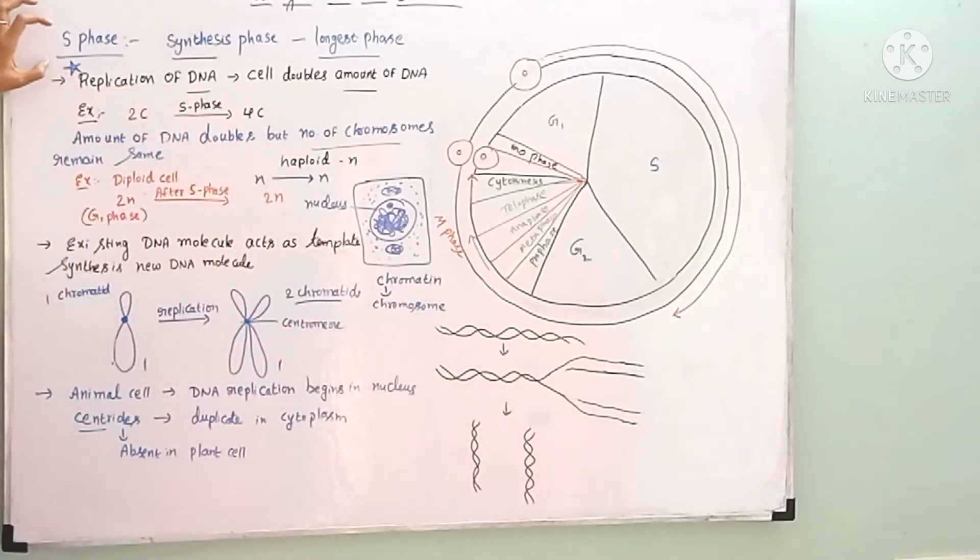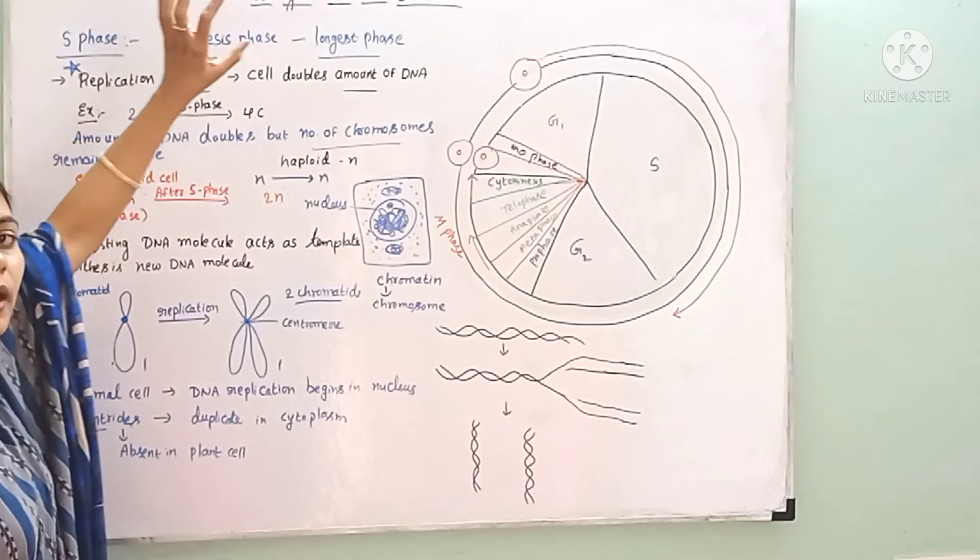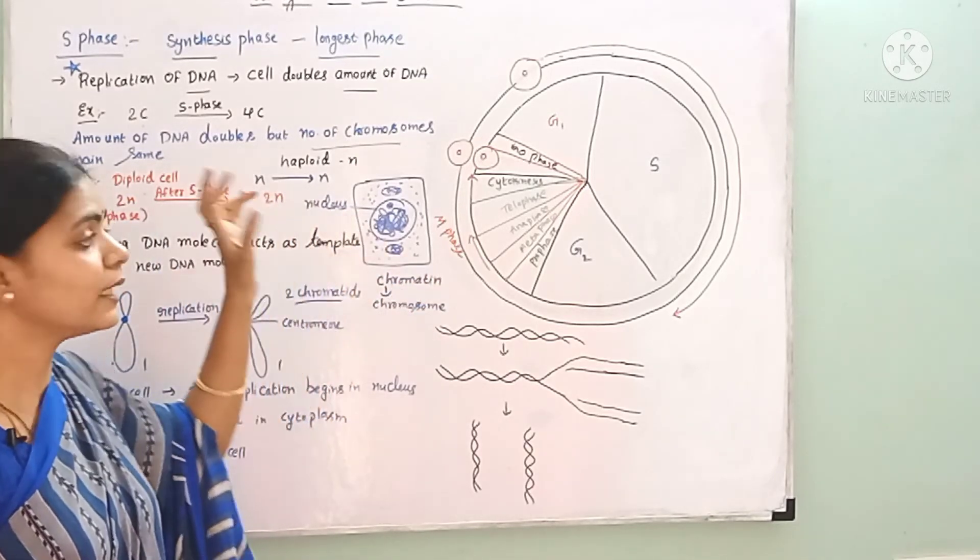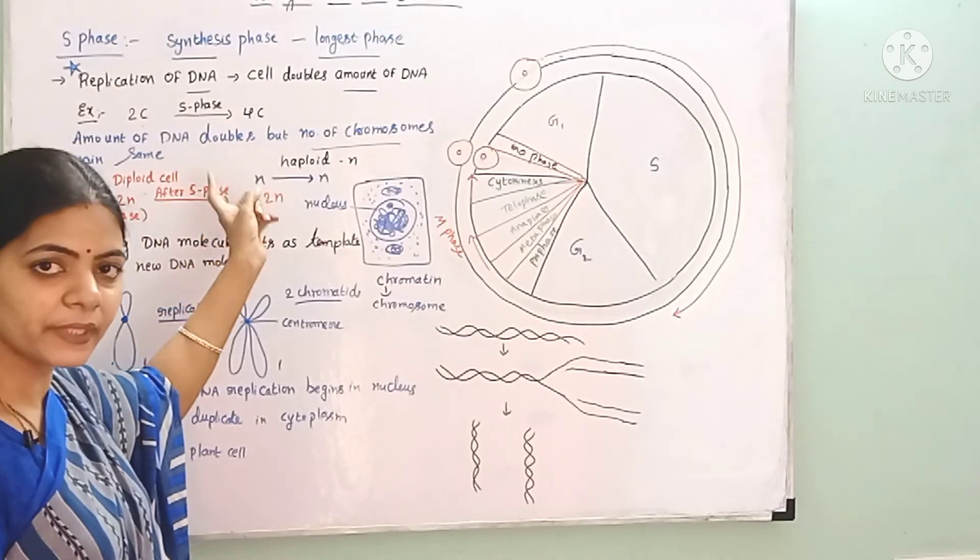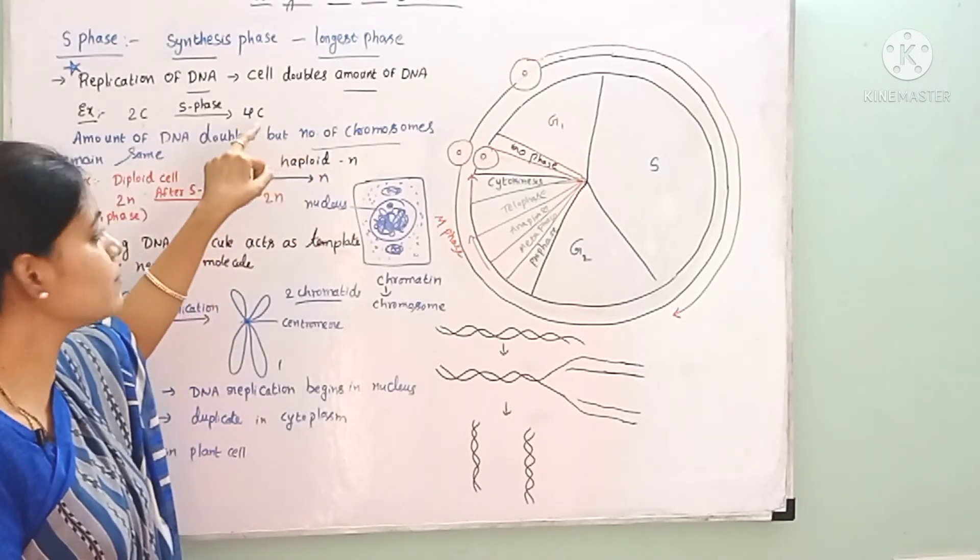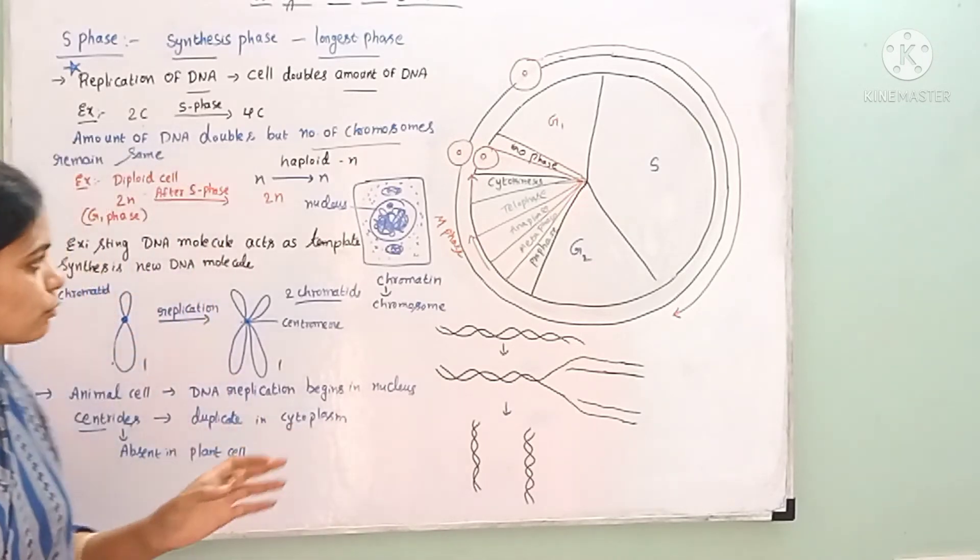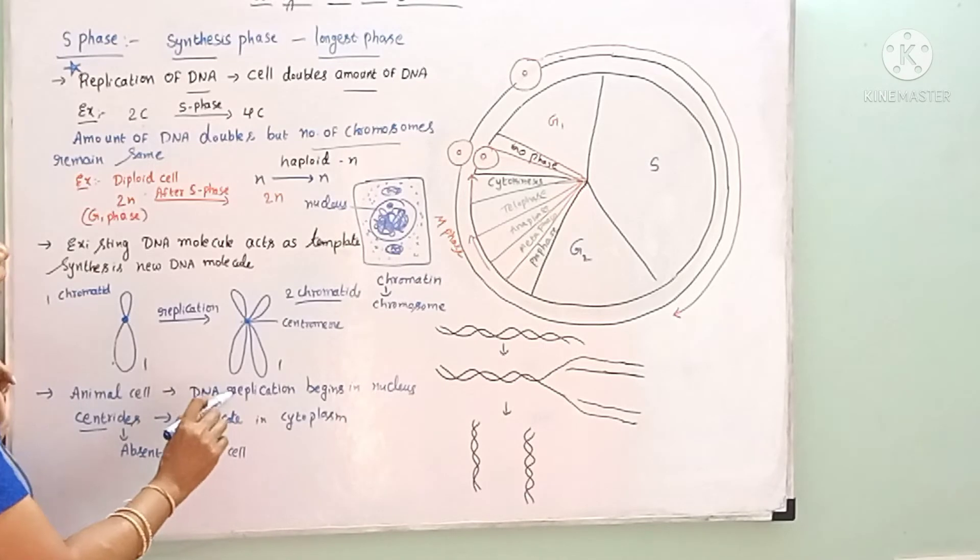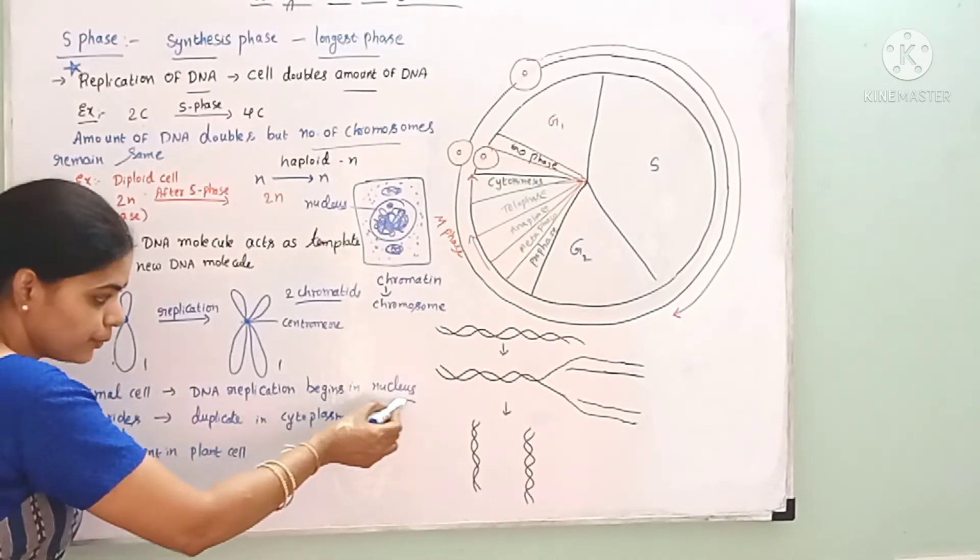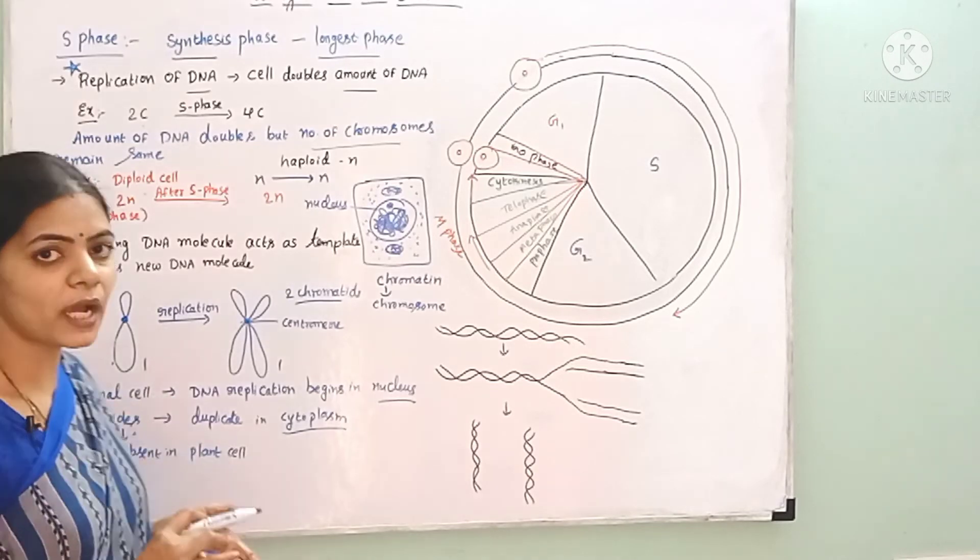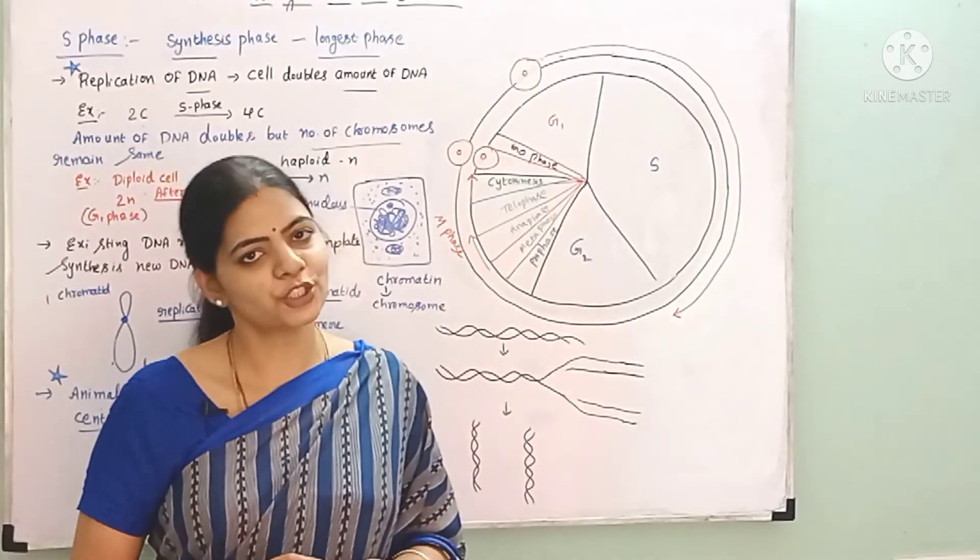So what is S phase? S phase is the synthesis phase and it is the longest phase. The replication of DNA takes place and the cell doubles the amount of DNA. The initial amount of DNA is 2C, after S phase it becomes 4C. There is only change in amount of DNA, but there is no change in the number of chromosomes. In animal cells, DNA replication occurs in nucleus and duplication of centrioles occurs in cytoplasm.